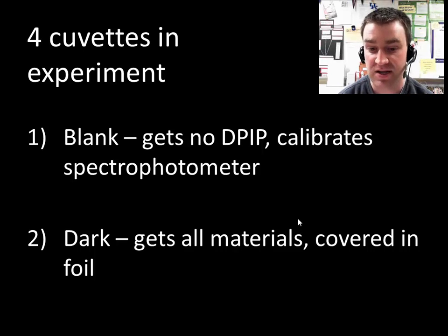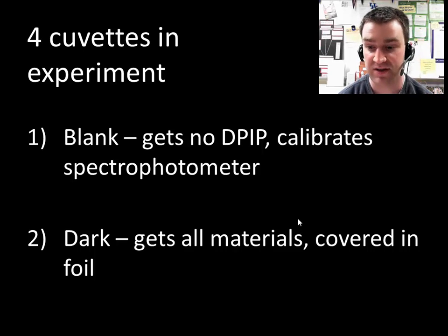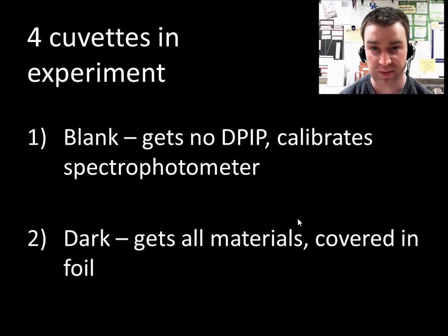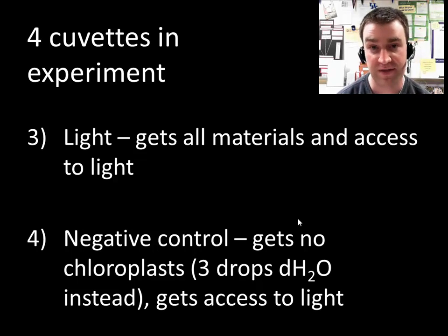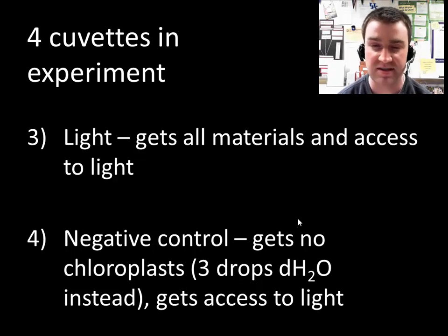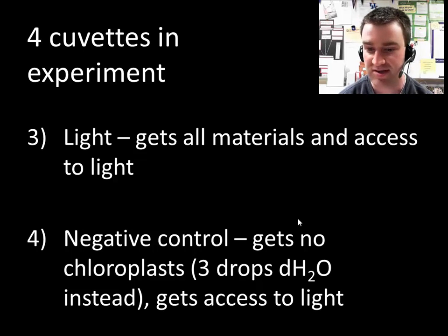The second cuvette is the dark cuvette. It gets all the normal materials — DPIP, phosphate buffer, water, and spinach chloroplasts — but we're going to cover it in foil so it doesn't get access to light energy. We're going to contrast that with a cuvette that does get access to light energy, which also gets DPIP, phosphate buffer, water, and spinach chloroplasts.